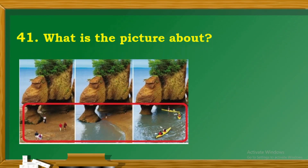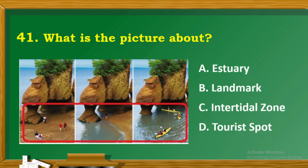Question 41: What is the picture about? A. Estuaries. B. Landmark. C. Intertidal zone. D. Tourist spot.